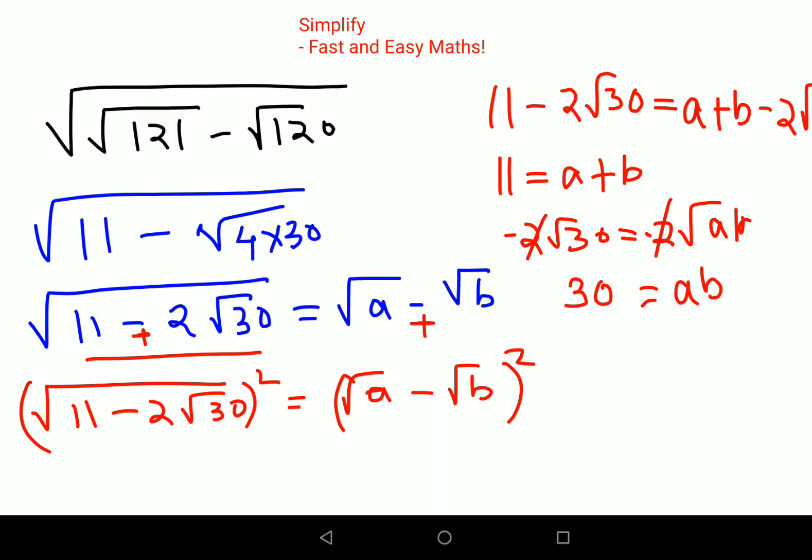Now I need to find two numbers whose product is 30 and whose sum is 11. Since 6×5 = 30 and 6+5 = 11, I can say a = 6 and b = 5.